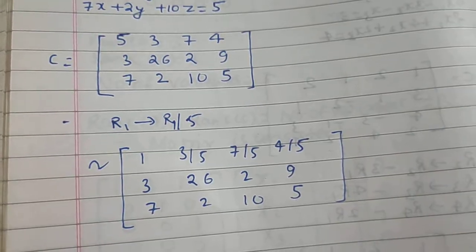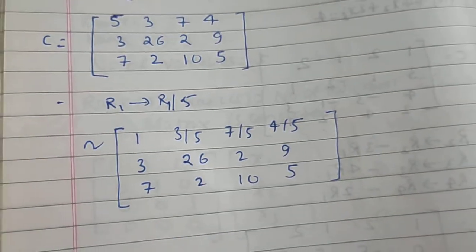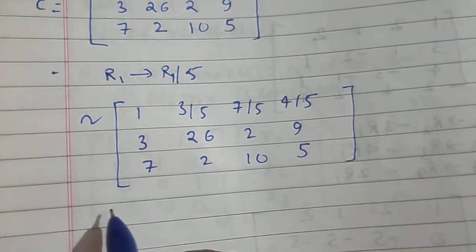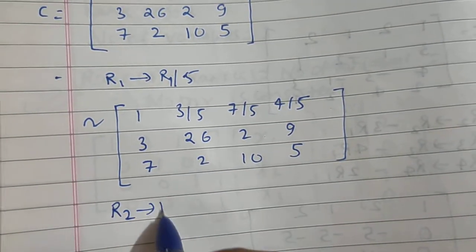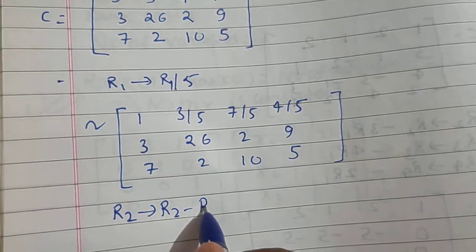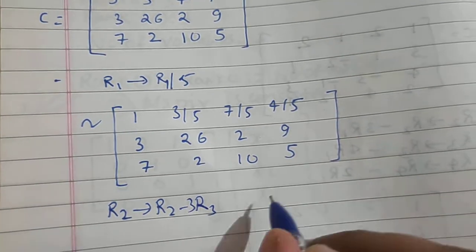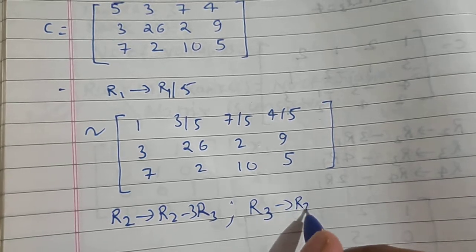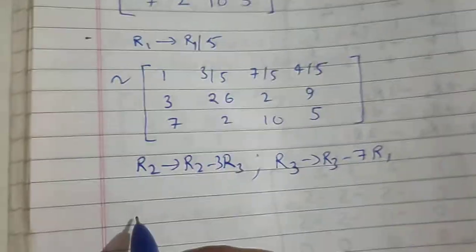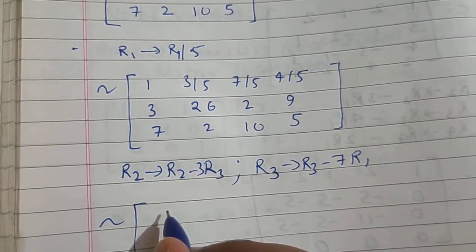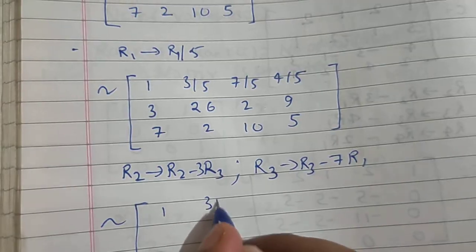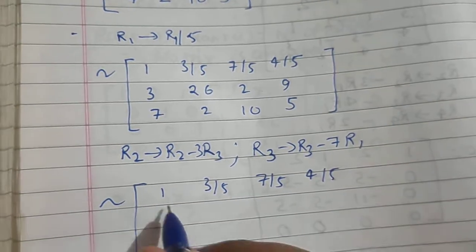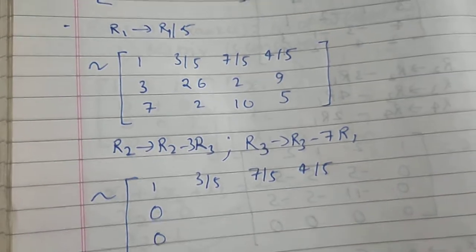With the help of this 1 we will be able to convert the entries below it to 0. Two operations: R2 → R2 minus 3 times R1, and R3 → R3 minus 7 times R1. So we get 1, 3/5, 7/5, 4/5 as it is. R2 becomes 0 in the first two positions.